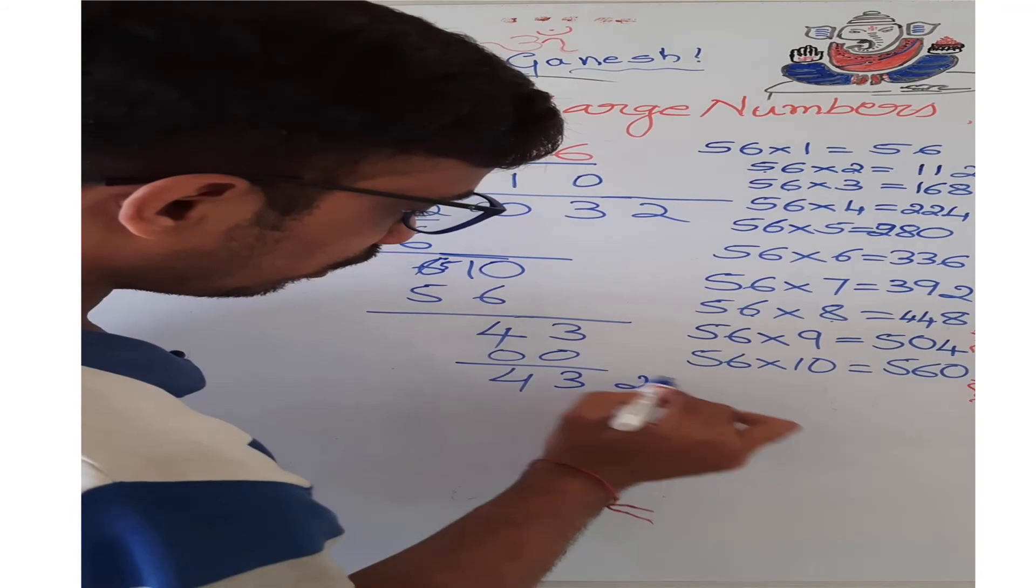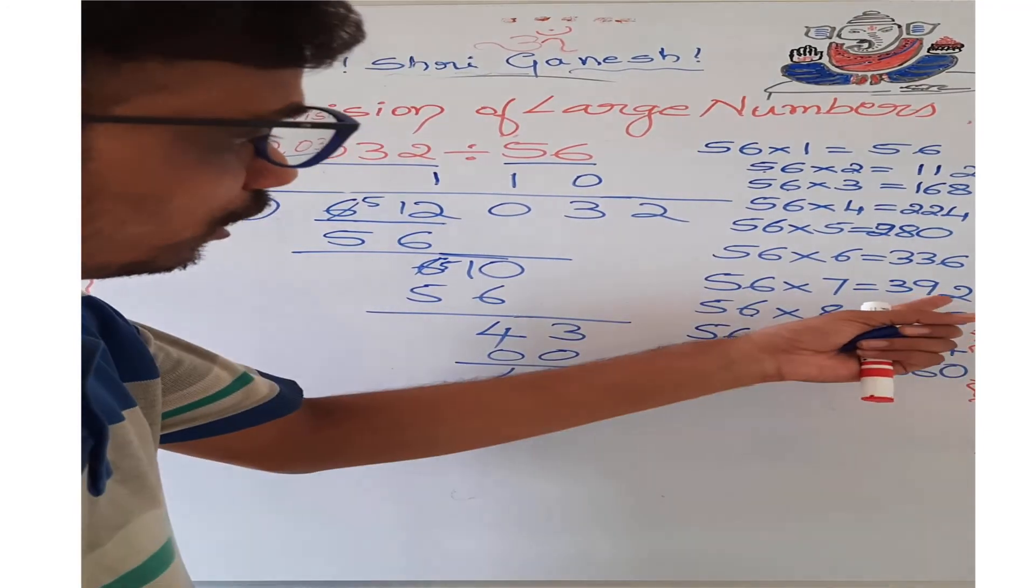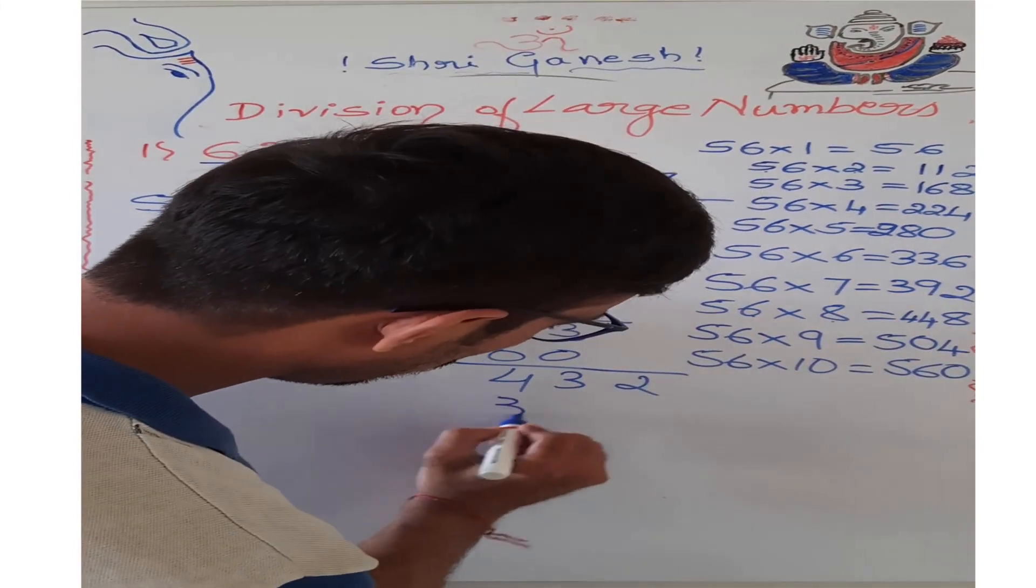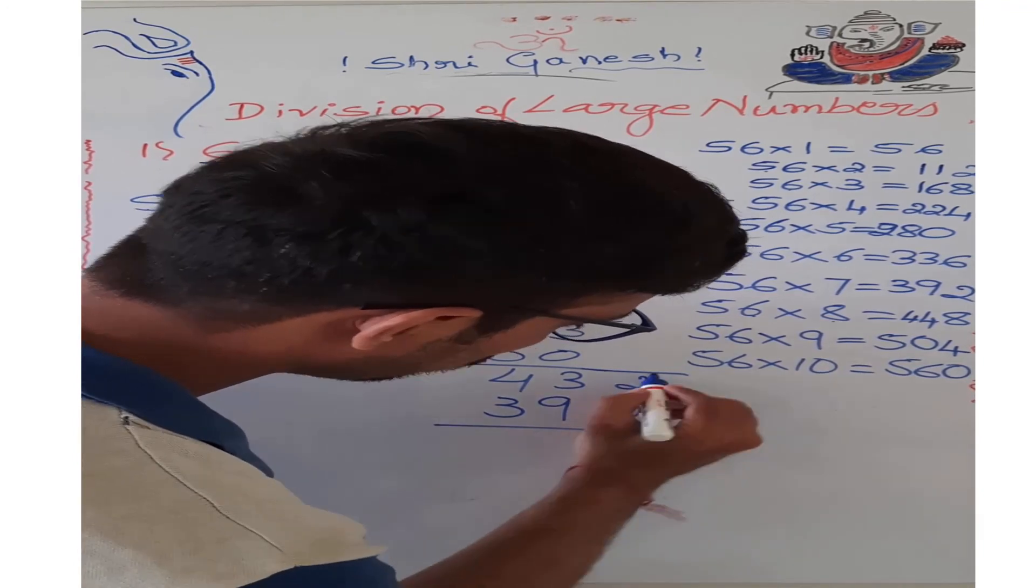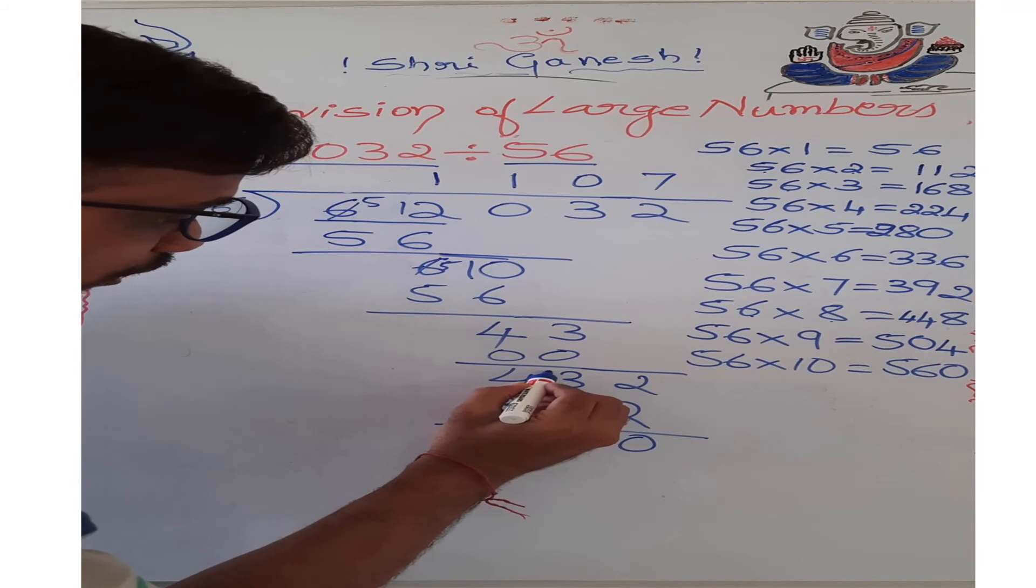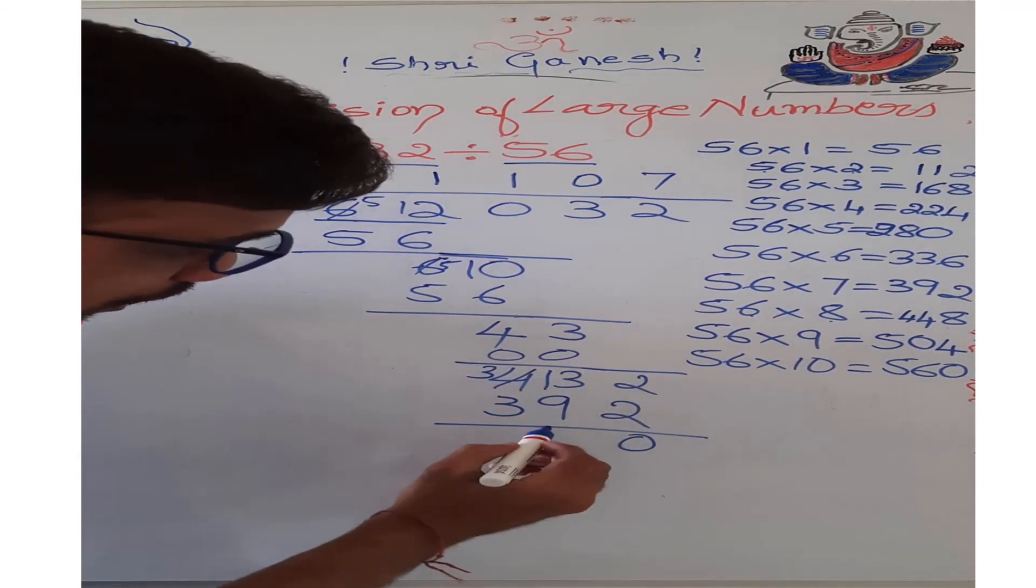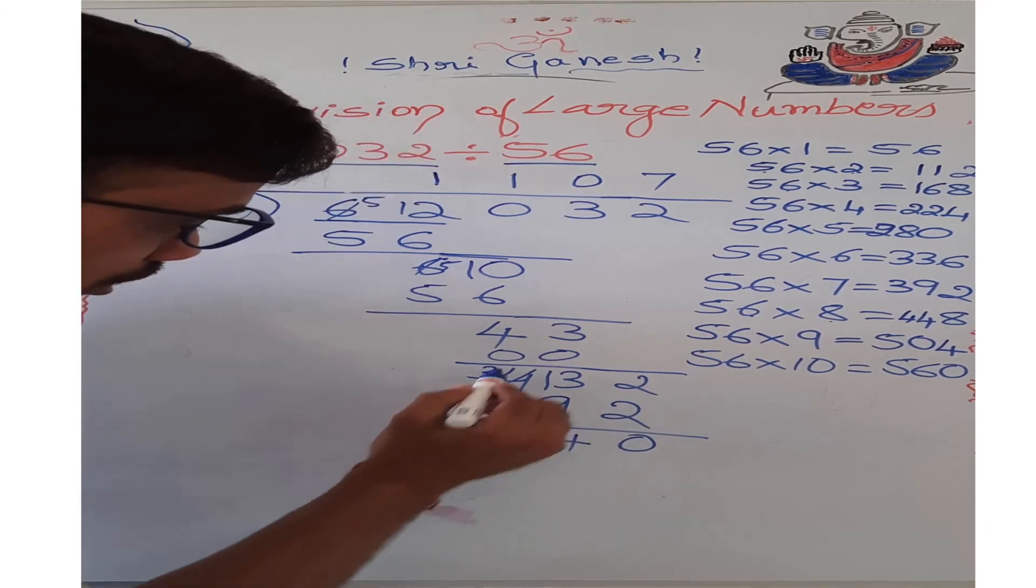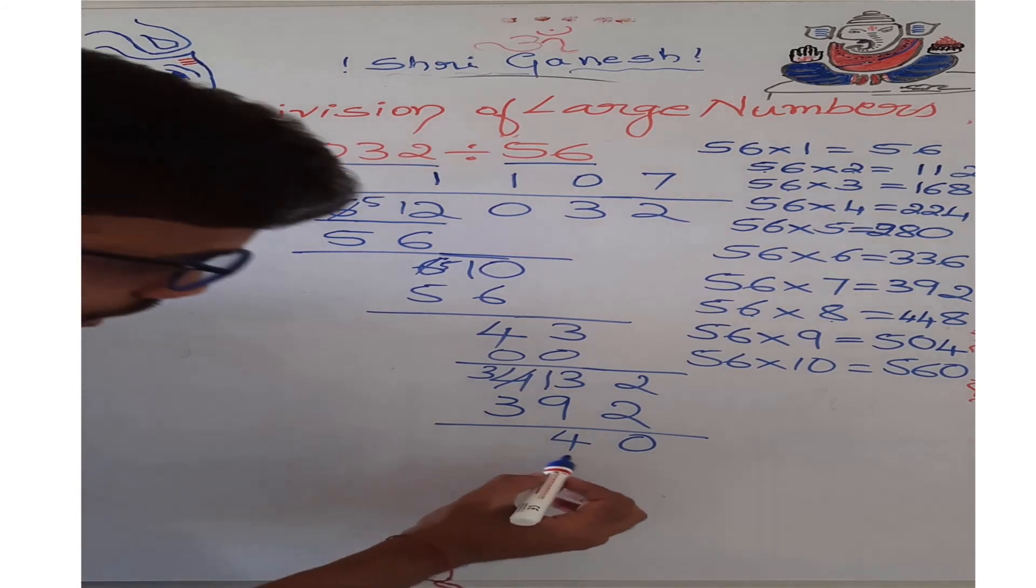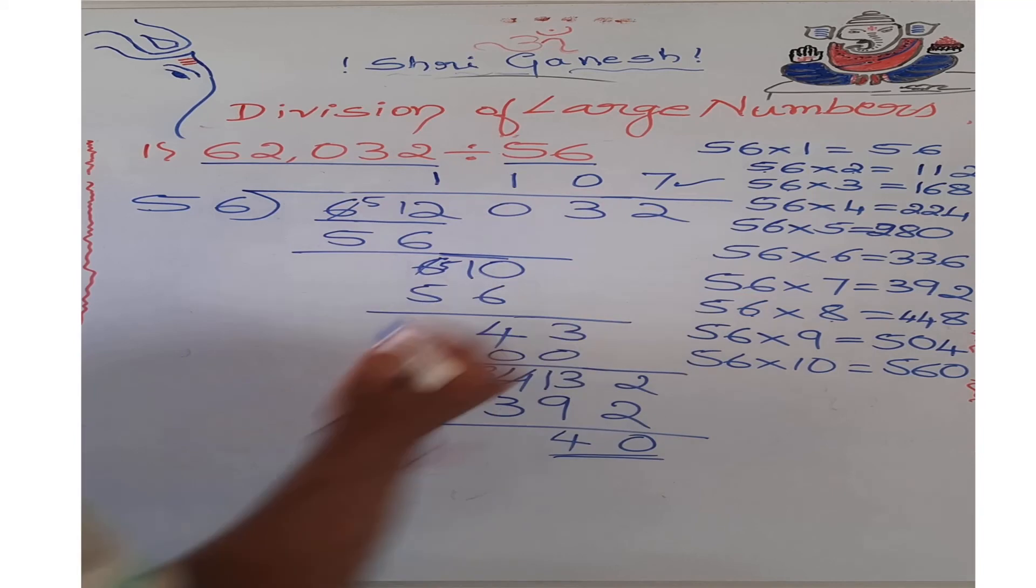Then I will take 2 down. This last digit is 432. The nearest multiple is 7, that is 392. Subtract this one: 2 minus 2 is 0. 3 is not possible, if I borrow 4 became 3. This 3 became 13, 13 minus 9 equals 4. 3 minus 3 equals 0. So whenever 0 is there we are not writing. This is my remainder, this is the quotient.